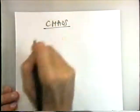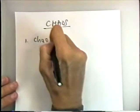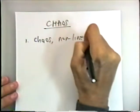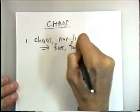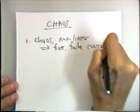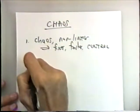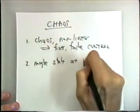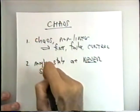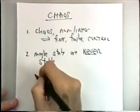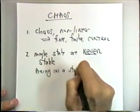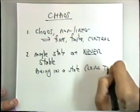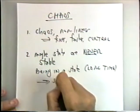To summarize: the two insights from chaos or nonlinear dynamics are first, that chaos or nonlinear systems can produce finer, faster control—which seems counterintuitive. The second idea is that maybe states in the body are never stable in the sense we're used to thinking, and that being in one state, even though you may stay there for a long time, switches you to somewhere else.